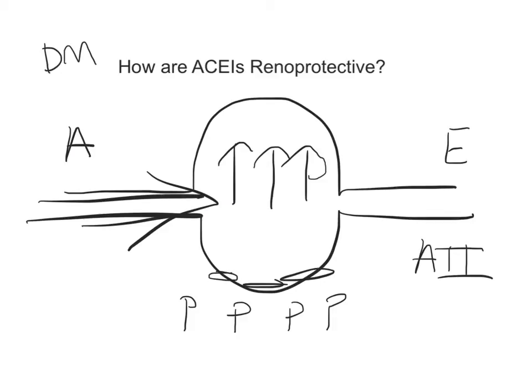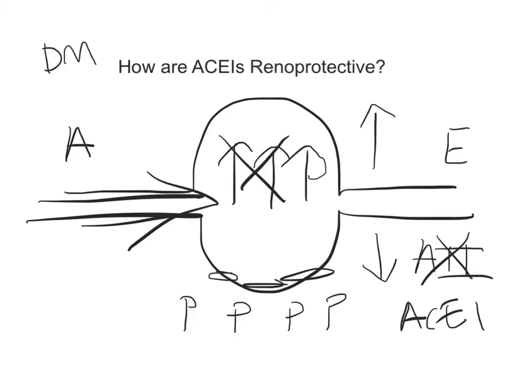So when you give an ACE inhibitor, you are blocking angiotensin II, causing a vasodilation of the efferent arteriole, and then reducing the pressure in the kidney and getting rid of the proteinuria. This is how ACE inhibitors can be renal protective.